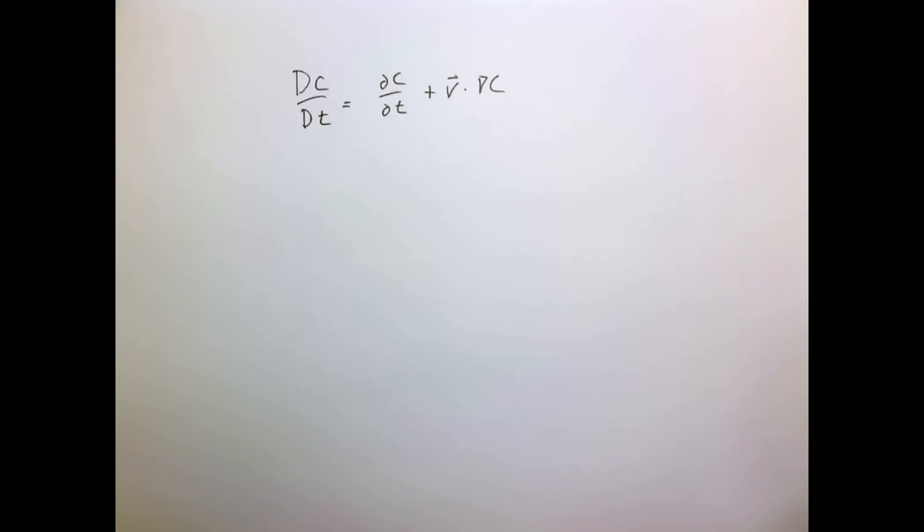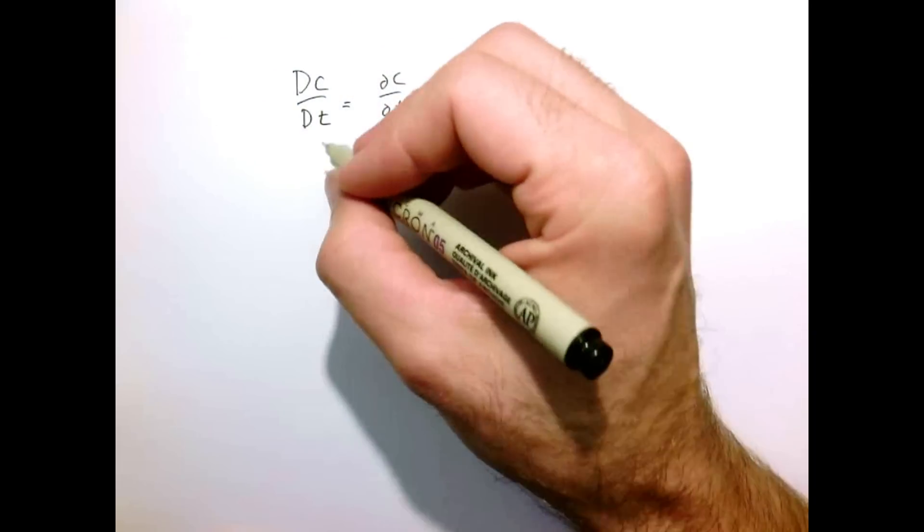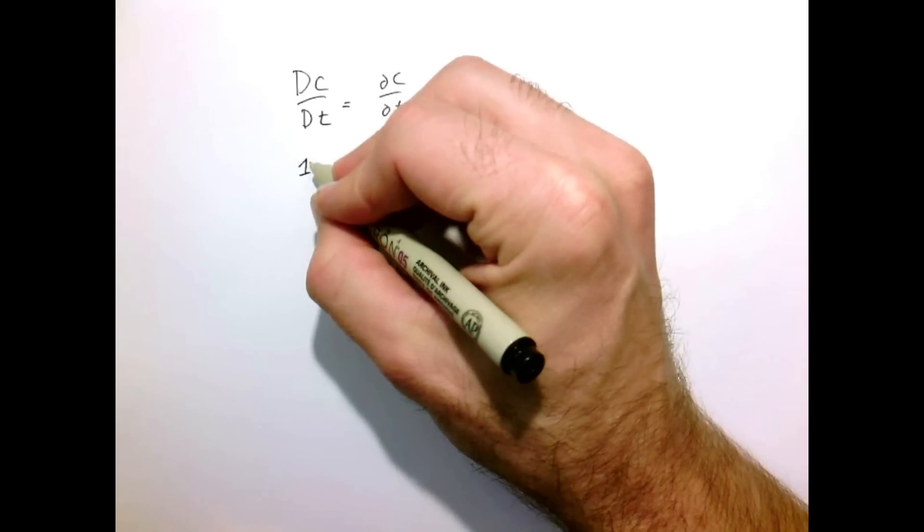So our material derivative operator, which is written like that, just to give a little bit of interpretation in 1D.